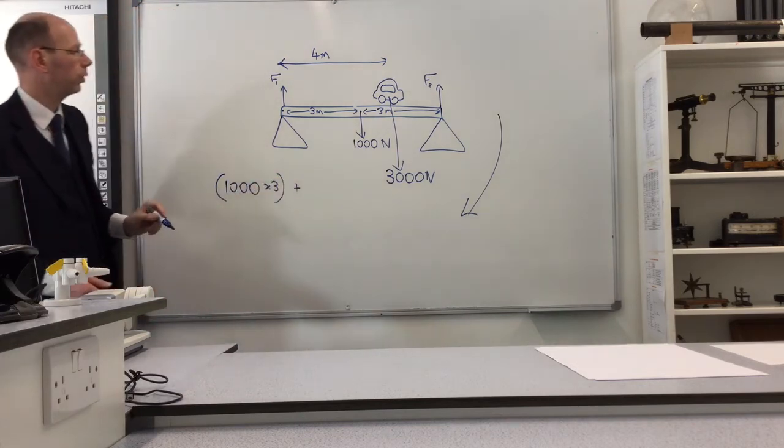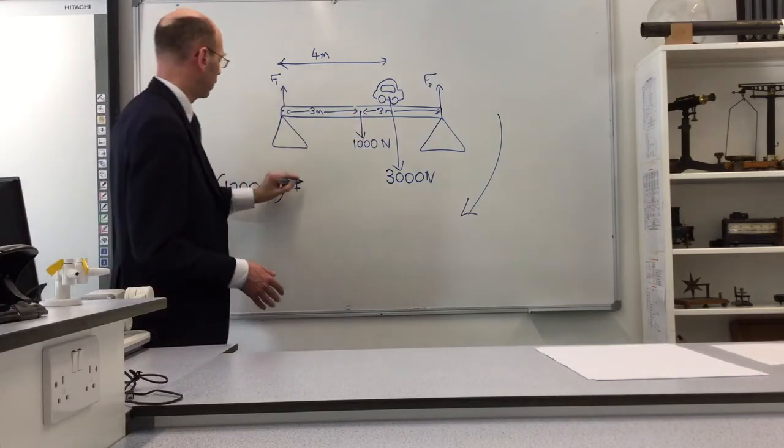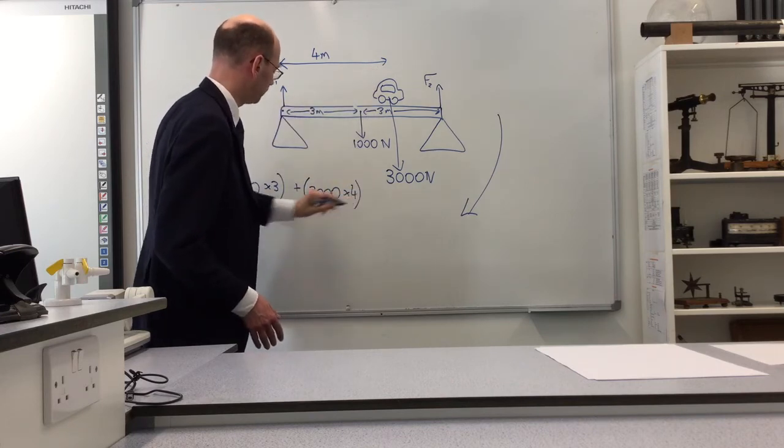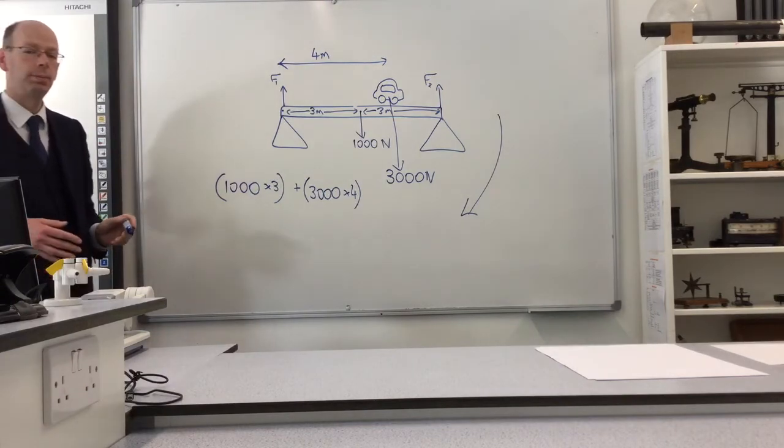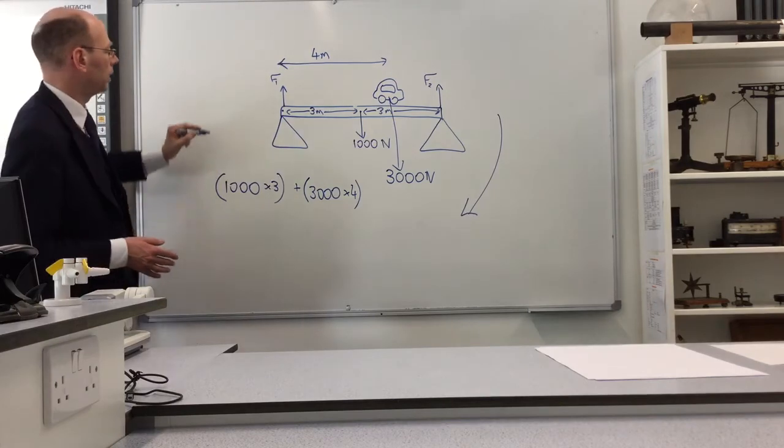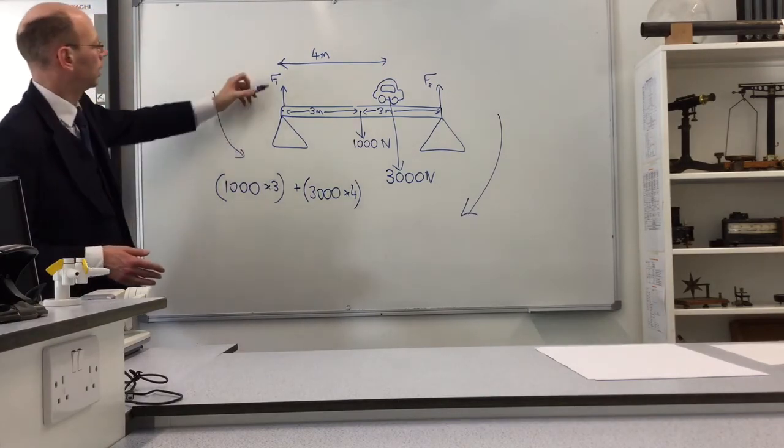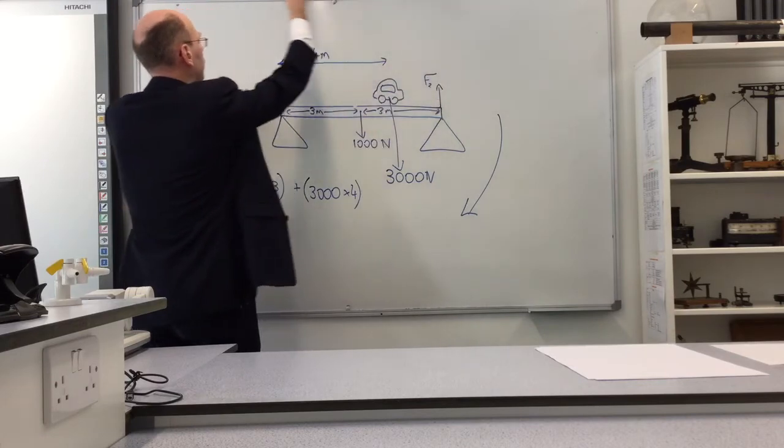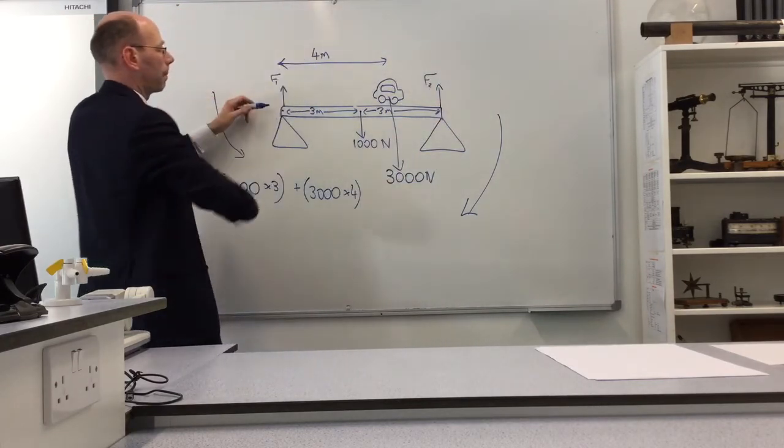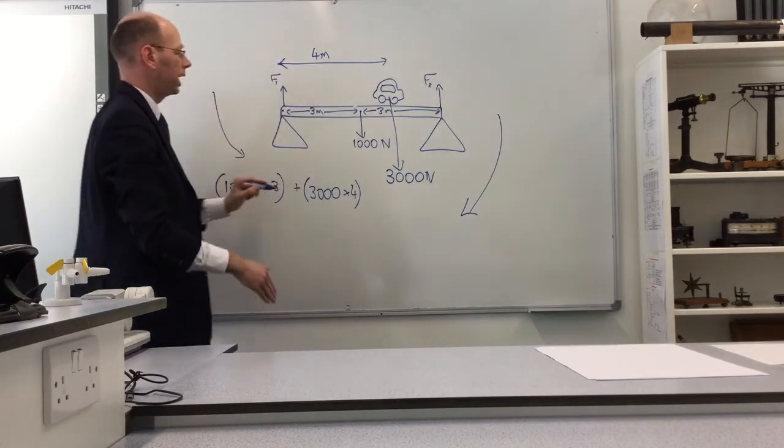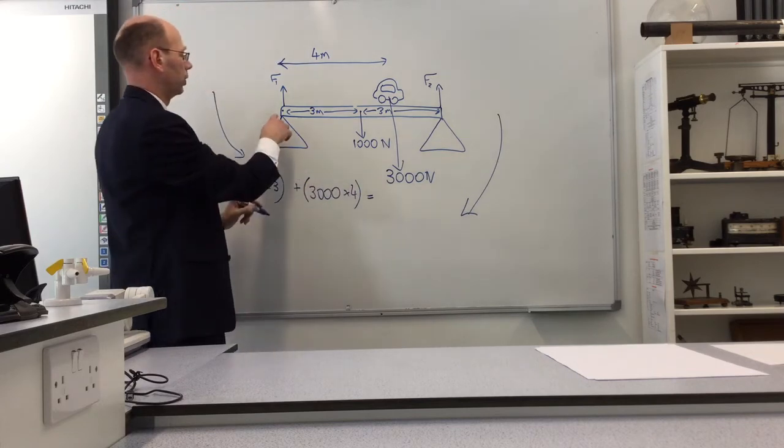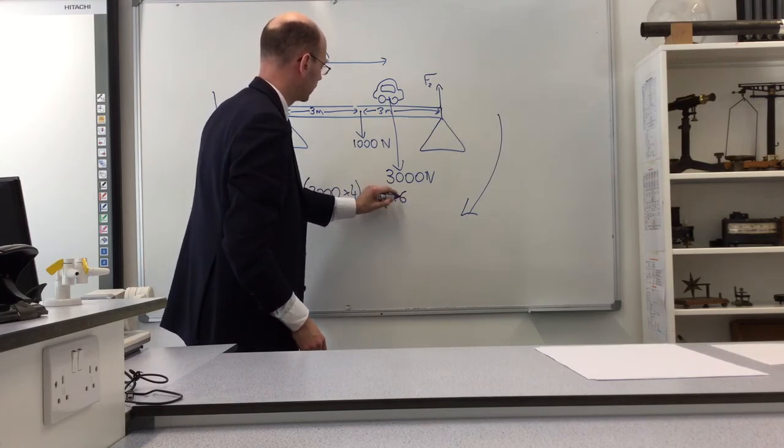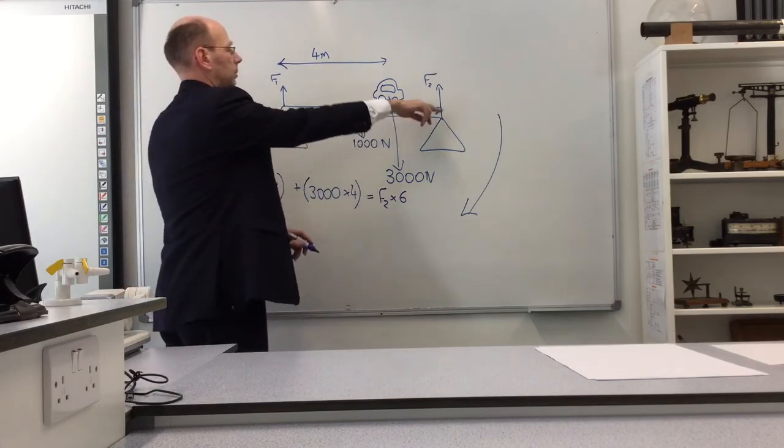And then we've got also the weight of the car, which is 3000, and that's 4 meters from our pivot. And those are the forces which are trying to spin the bridge clockwise. Now, let's think about the anti-clockwise moments. We can ignore F1 because we're imagining that our beam is pivoted here. So in fact, our only force that's trying to spin the bridge anti-clockwise is F2. F2 will be creating an anti-clockwise moment, and that will be equal to force times distance. The force is F2, and the distance from the pivot is 6, because we've got 3 meters and 3 meters to make 6 meters in total.